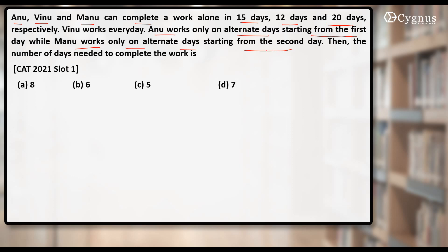Manu works only on alternate days starting from the second day, that means Manu will be working on second day, fourth day, sixth day and so on. Then the number of days needed to complete the work is: 8, 6, 5 or 7?